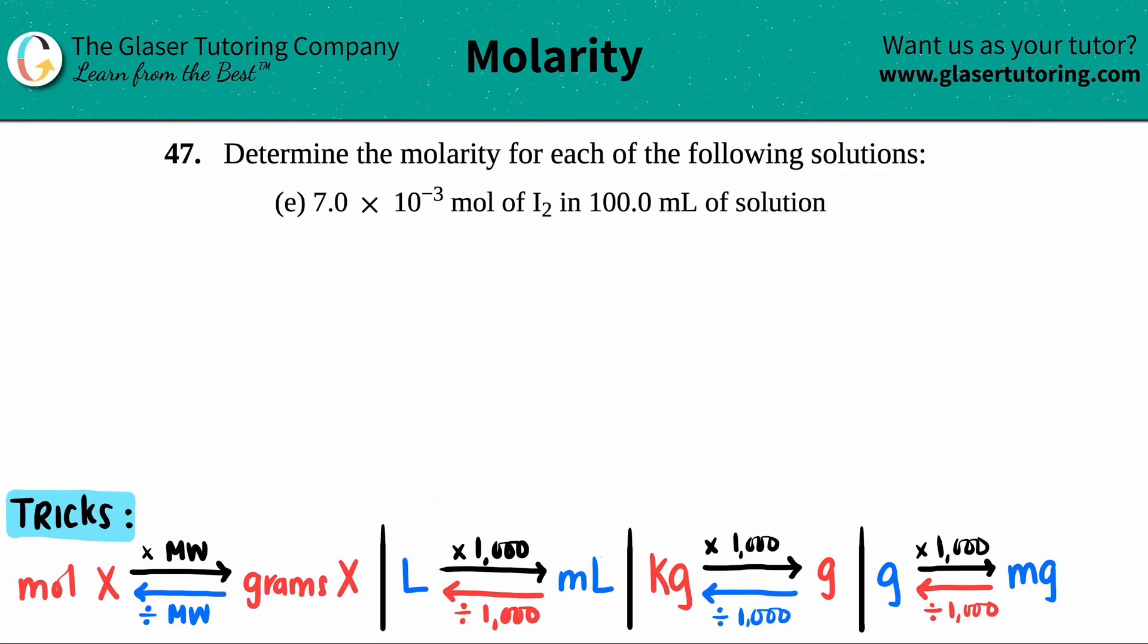Number 47, determine the molarity for each of the following solutions. In this case, they told us that we had 7 times 10 to the negative 3 moles of I2 in 100 mL of solution.